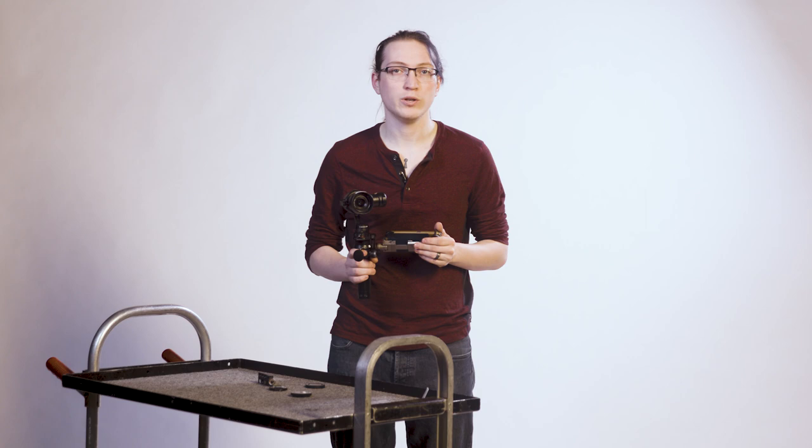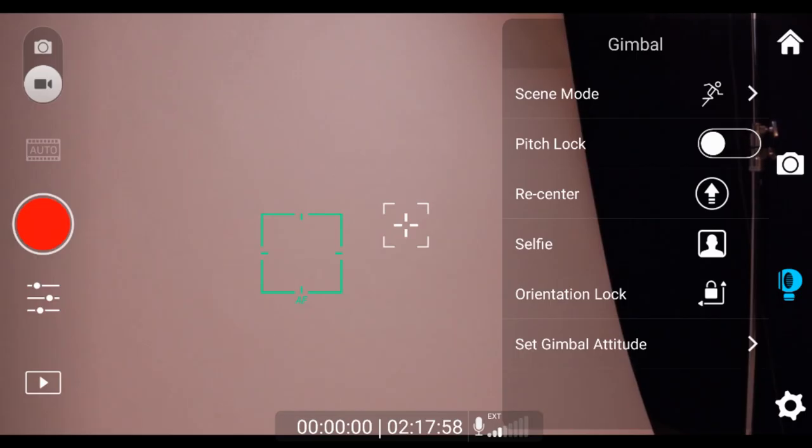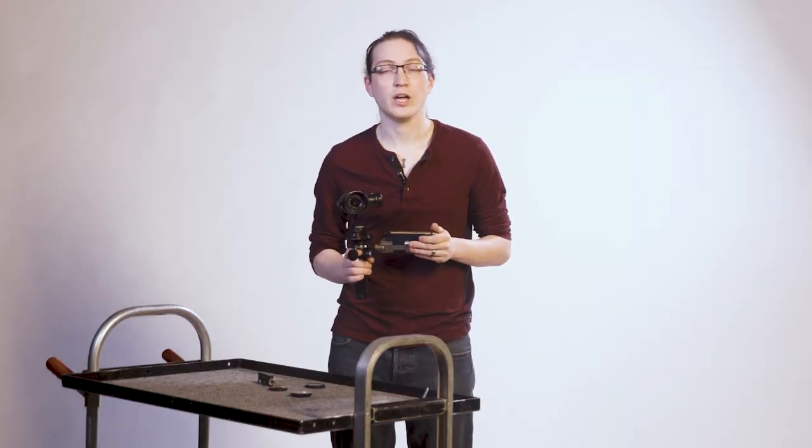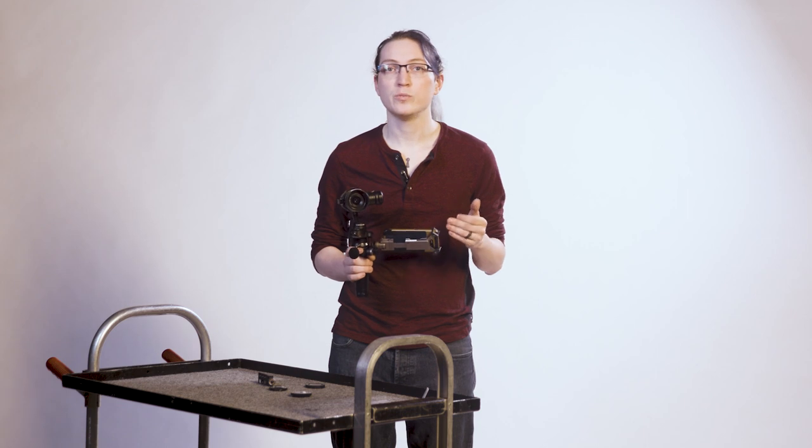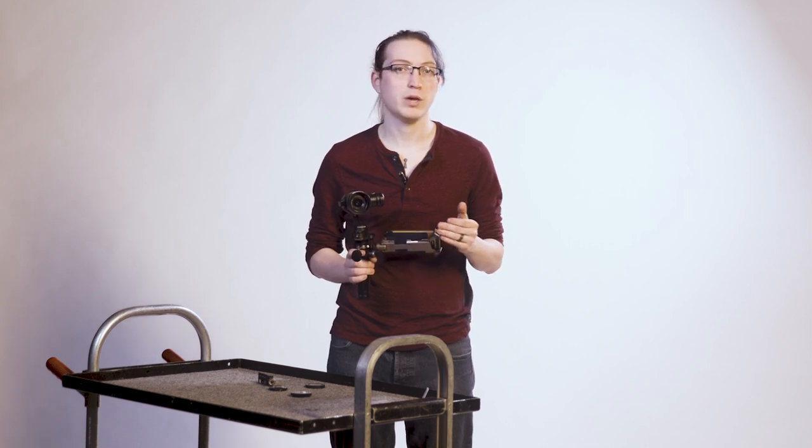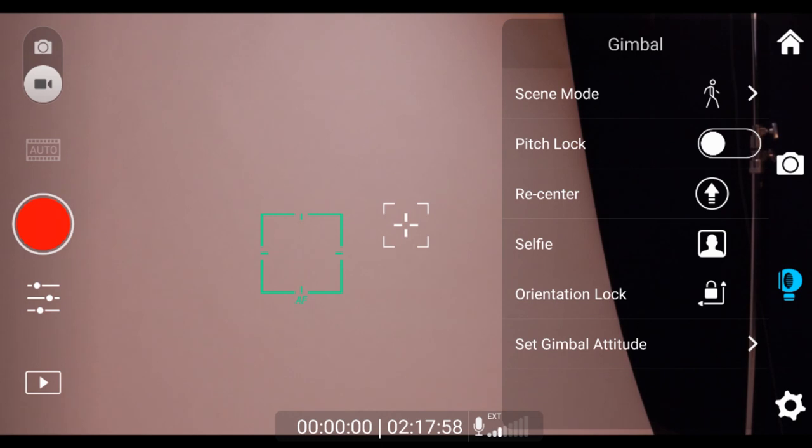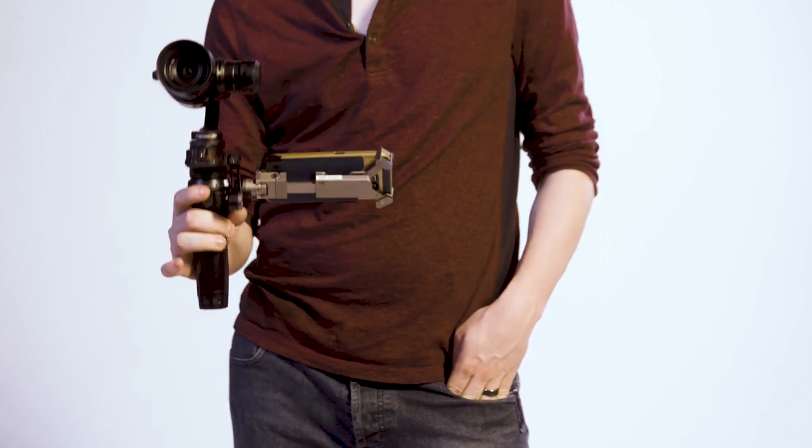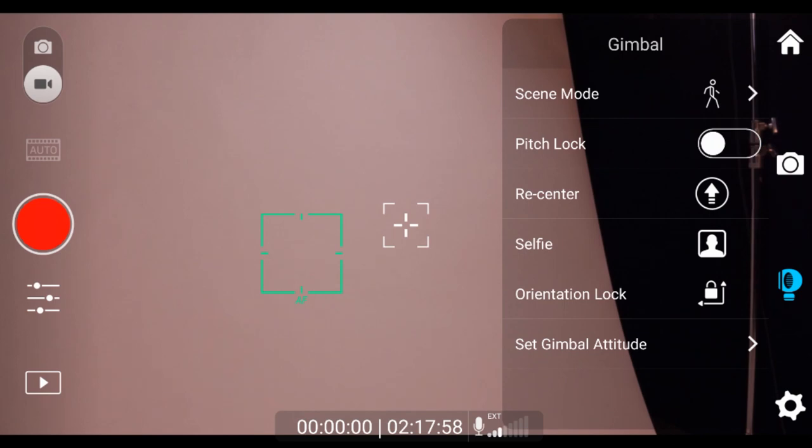You can adjust how the gimbal reads your movement in a few different ways. The easiest way is with scene mode. This allows you to choose from walk for general smooth b-roll and tracking shots, sport to keep fast moving subjects in frame, and wearable if you are attaching the Osmo to yourself. I generally choose to operate in walk mode so that I have a smooth even movement, but I find sport to be helpful when I need to make fast pan or tilt movements.